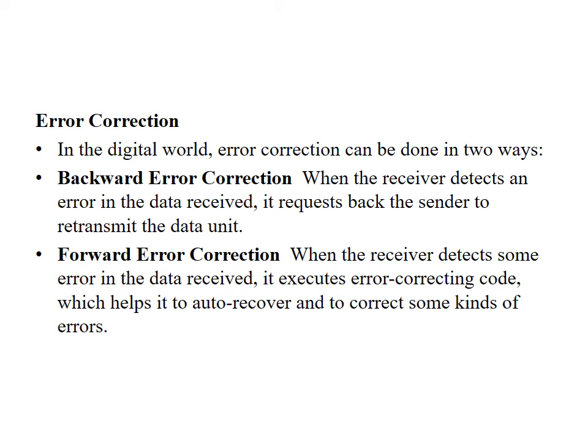How do we correct errors in network frames at the data link layer? In the digital world, error correction can be done in two ways. The first is backward error correction — when the receiver detects corrupted data, it requests the sender to retransmit the data unit. The second is forward error correction — when the receiver detects some error in the received data, it executes an error-correcting code which helps it to auto-recover and correct some errors in the frames.